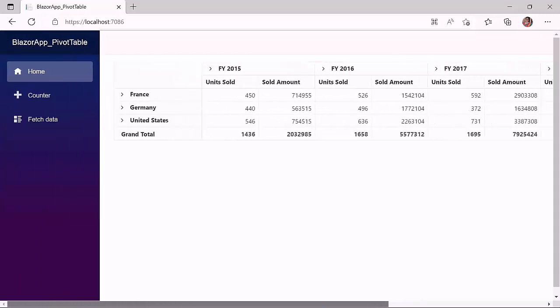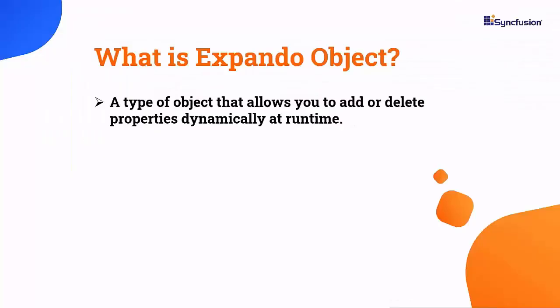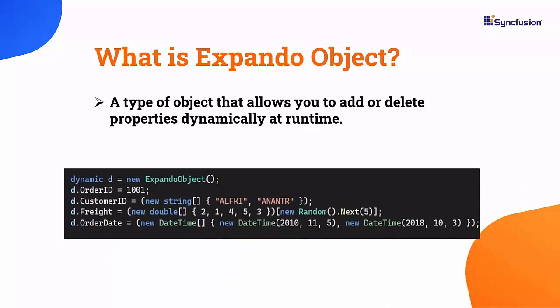Now, I will show you how to bind expando object data source to the pivot table. The expando object is a type of object that allows you to add or delete properties dynamically at runtime. You can use the expando object in situations where you want to create an object whose model type is defined at runtime.